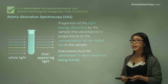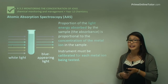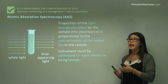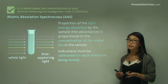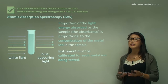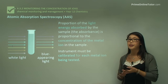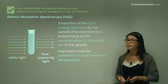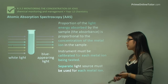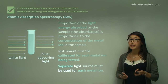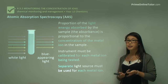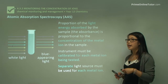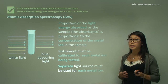The instrument must be calibrated for each metal ion being tested. If we're looking for copper, we calibrate for copper; if we change to zinc, we calibrate for zinc before analyzing the sample, otherwise it won't work. Separate light sources must be used for each metal ion because each is specific for that ion.